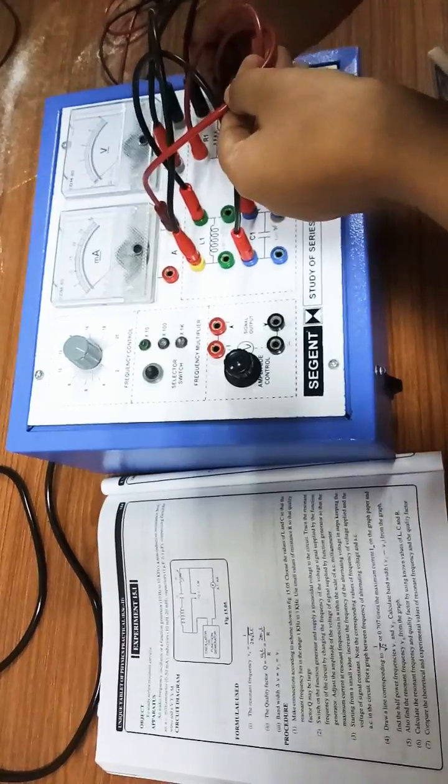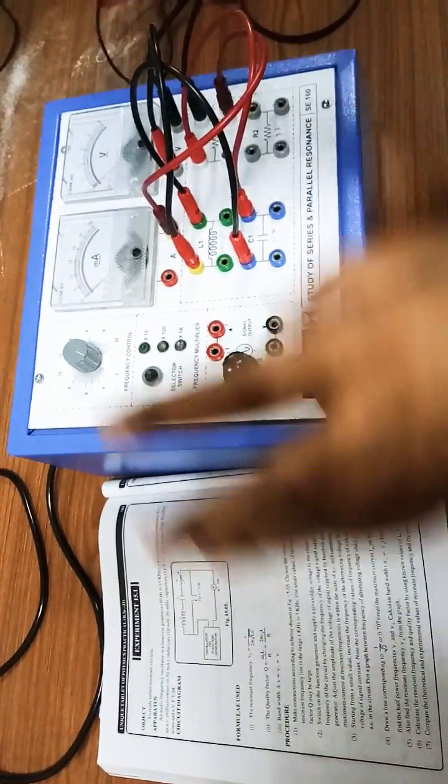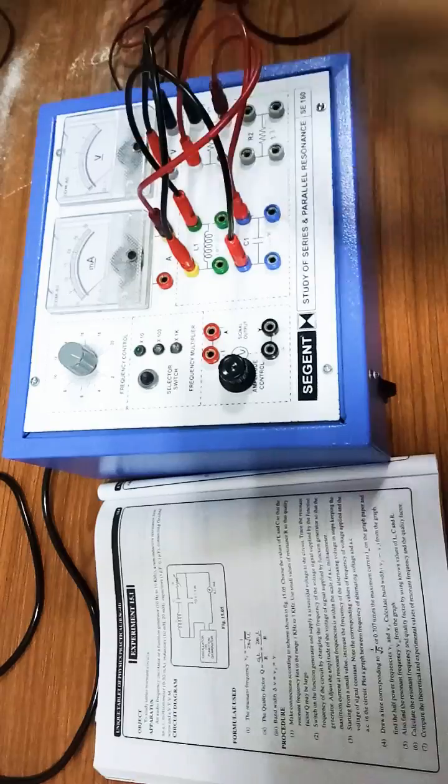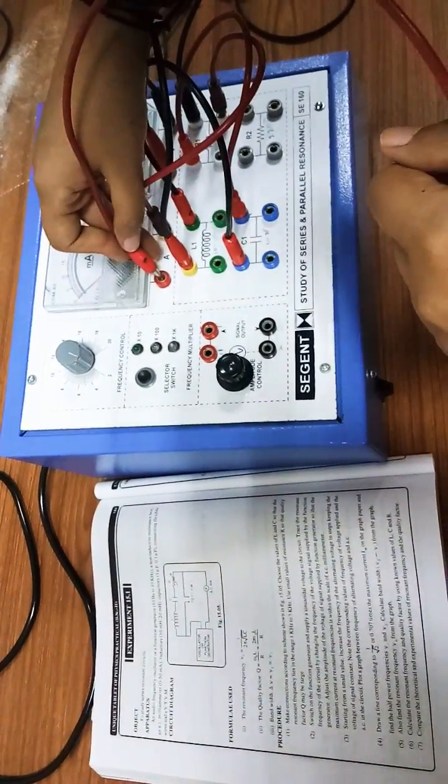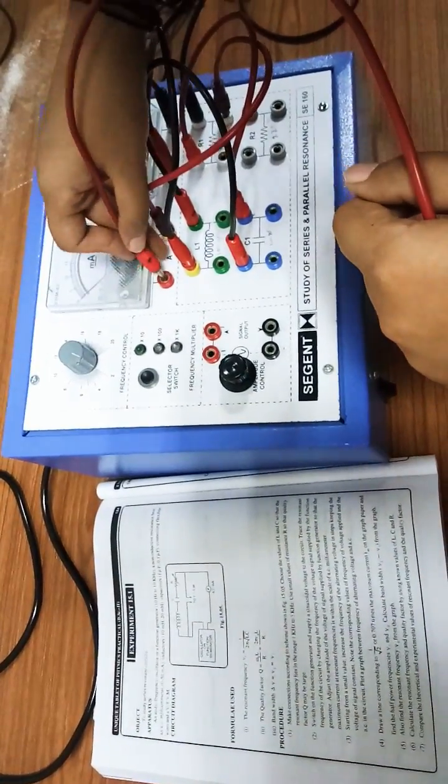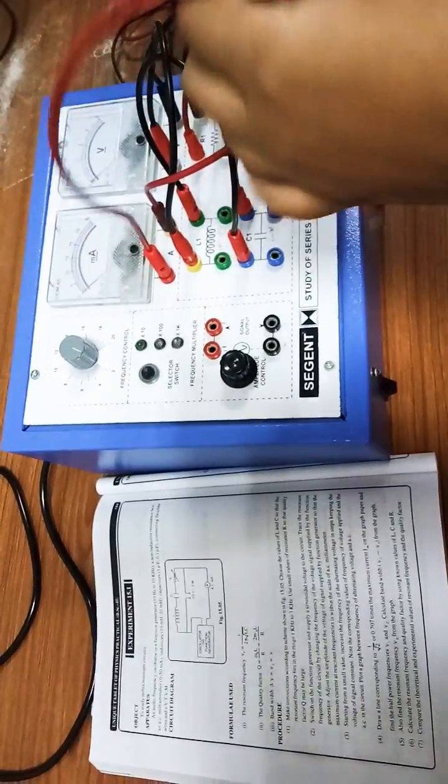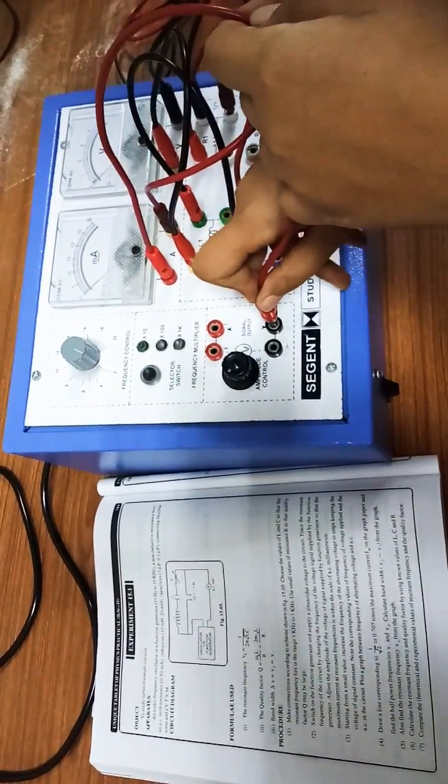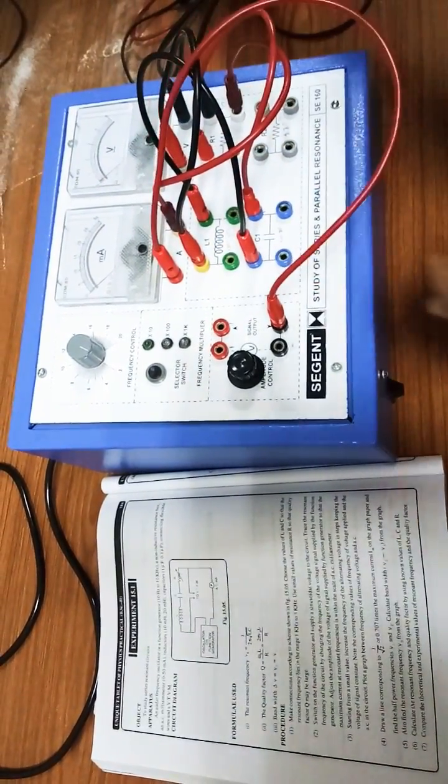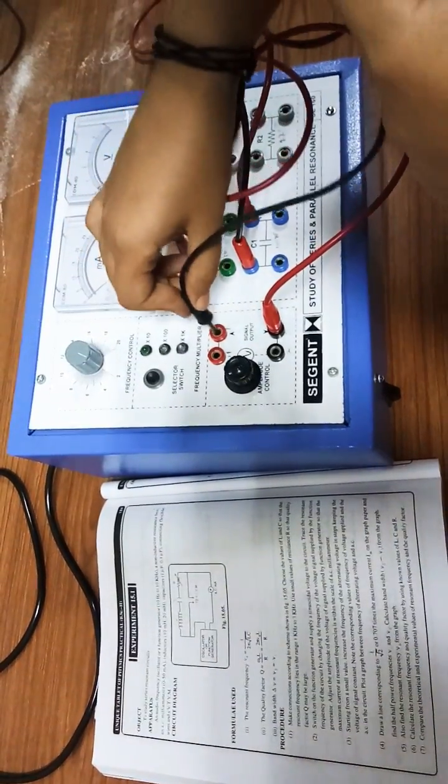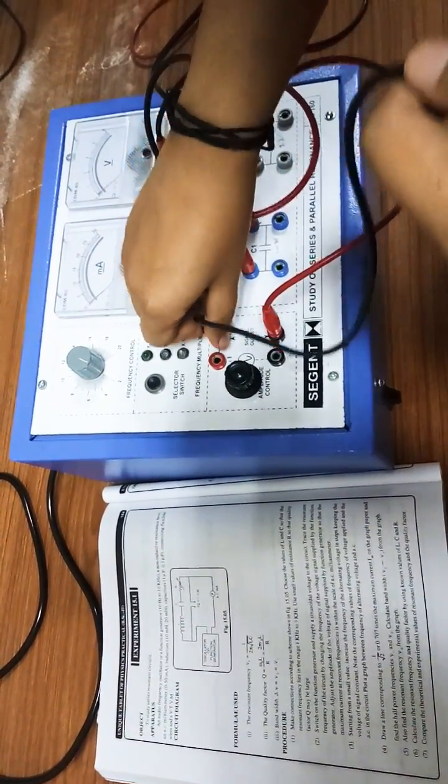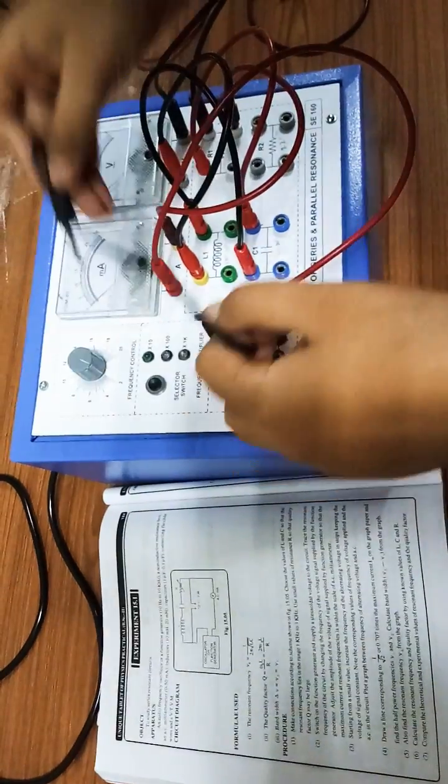Then we'll have the first of the emitter connected to the second of the oscillator or function generator, and then the first of the oscillator or function generator is connected to the inductor's first terminal.